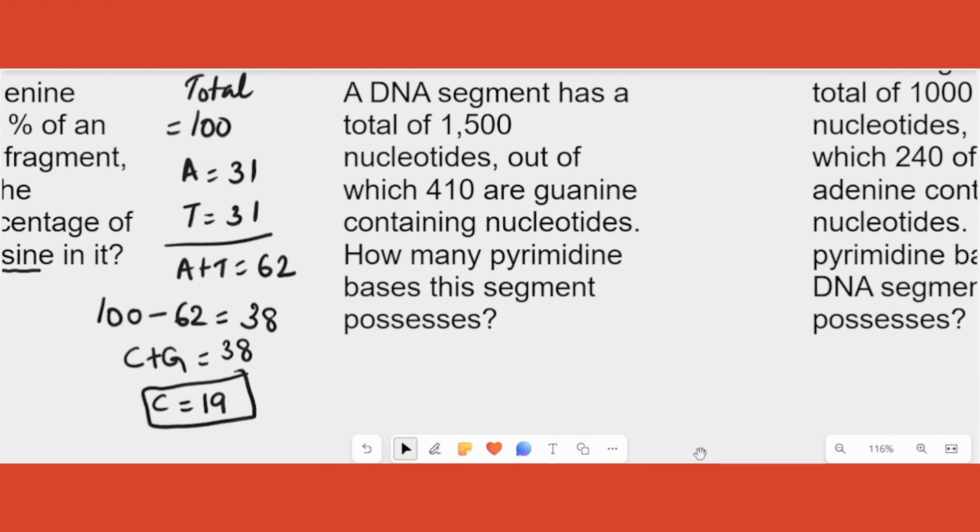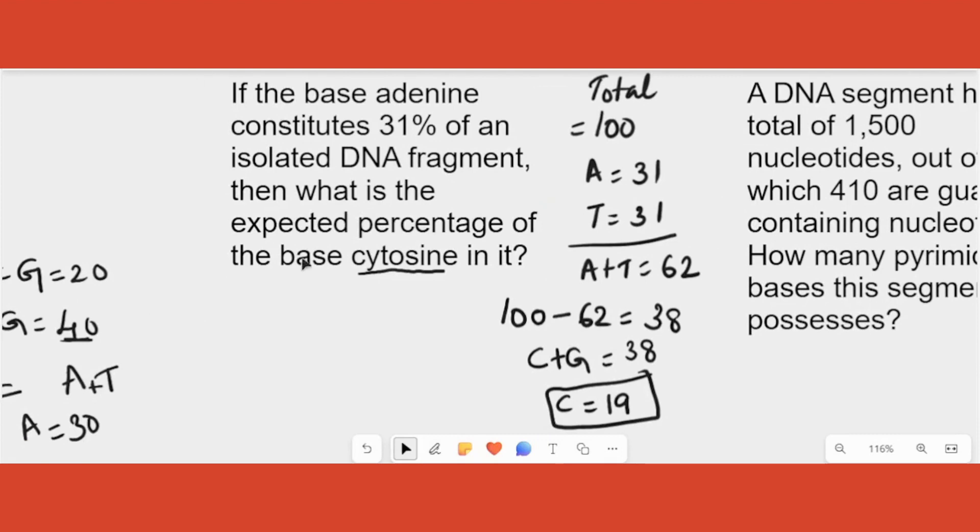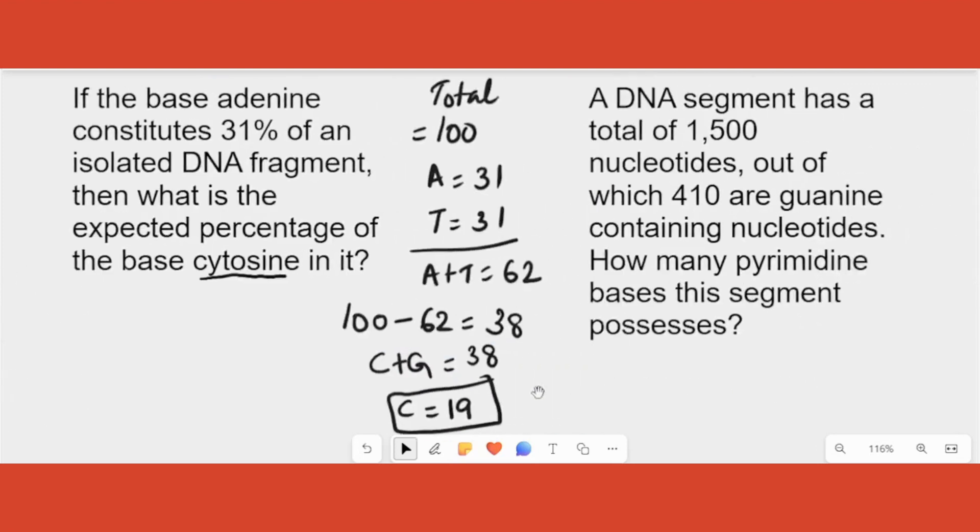Total is 100. Take every time total to be 100 if no number is given. Then from there whatever number is given, whatever nitrogen base is given, write that number down. Then obviously its complementary base also same number it would be. Total you make from 100 you subtract and that number is the other two bases total divided by 2. That's it. Simple.